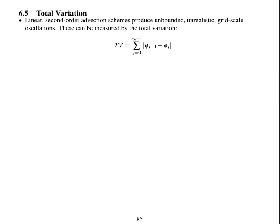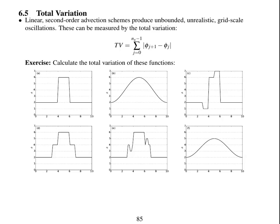We're going to define a quantity called total variation, which measures the oscillations produced by an advection scheme. Total variation is the sum over all grid points of the magnitude of the difference in phi at adjacent grid points.